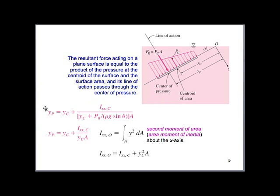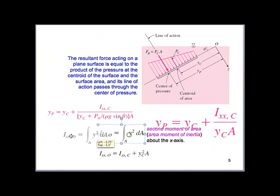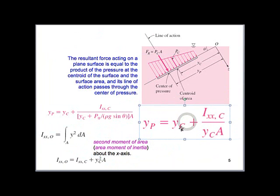Now, this is the primary equation we'll be using. So y sub p, or the location where the force acts, is equal to the distance from the surface of the water to the centroid, plus this, and this is just what I'm going to call a little bit. So it's the centroid, the distance from the surface to the centroid, plus a little bit more. So this is a little bit. So like I mentioned to you before, a lot of times we're going to be ignoring this term here. So let's just consider this one.